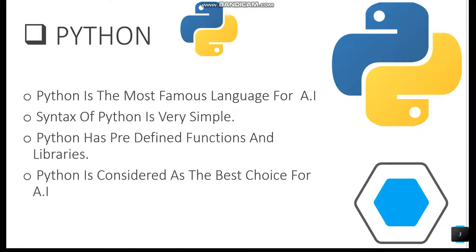First, we have Python. Python is one of the most famous and most effective languages for artificial intelligence. Most developers prefer Python because its syntax is very simple and it is one of the easiest languages to learn. Python has predefined functions and libraries which are used to implement artificial intelligence.